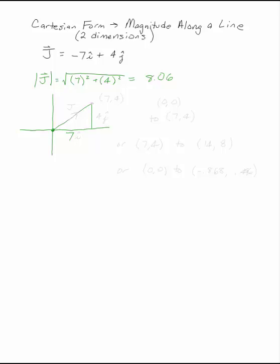For example, if you went out 7i and up 4j, you would get to a point (7,4). So j lies along the line from (7,4).